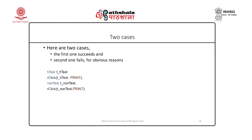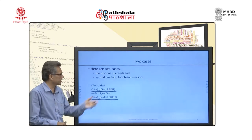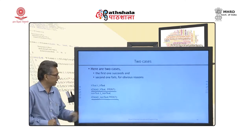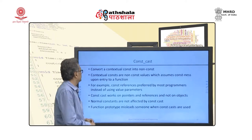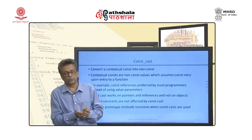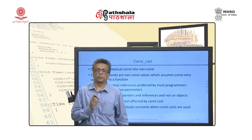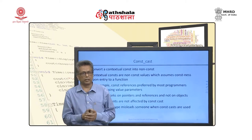Now let us look at the remaining three types of casting. The ANSI C++ committee added four different casting operations. Dynamic cast is the most critical and most important, but there are three others.